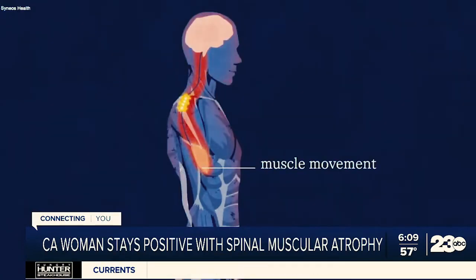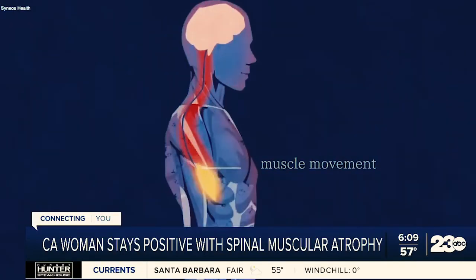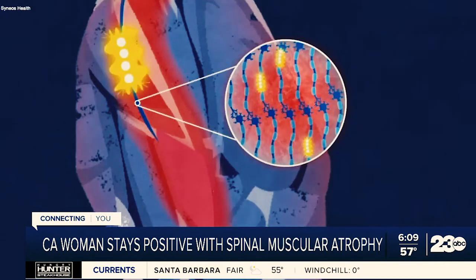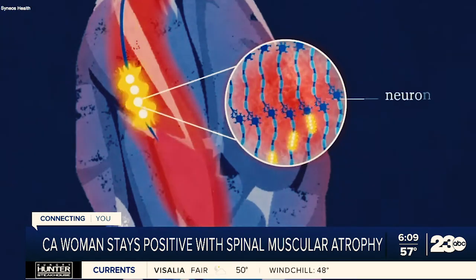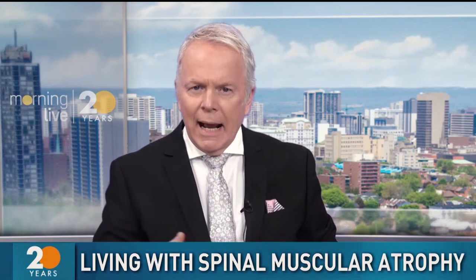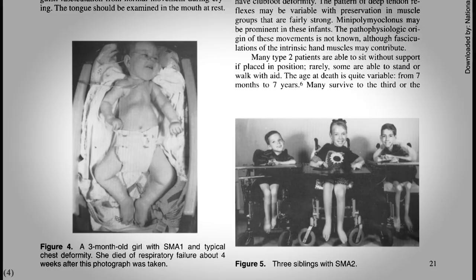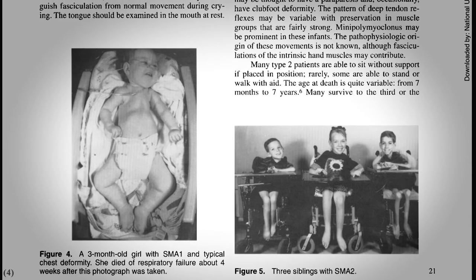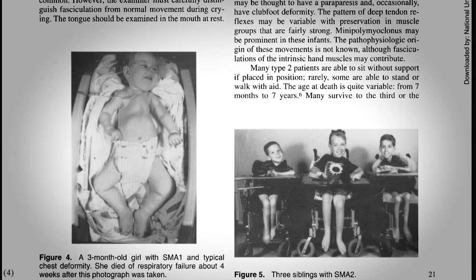If your lower motor neurons die or don't develop properly because of a genetic condition, it's called spinal muscular atrophy, or SMA. SMA is a rare degenerative muscle disease. Patients are missing the nerve cells in the spine that tell their muscles to move. Until 2016, there were no treatments for this disease.